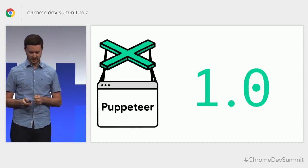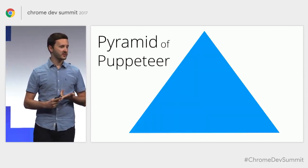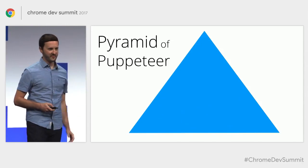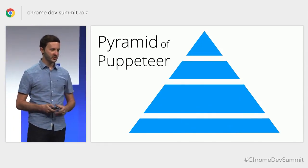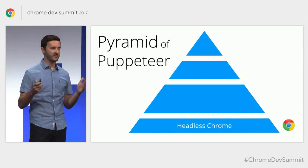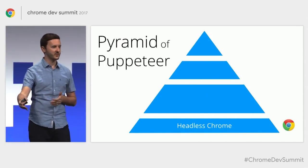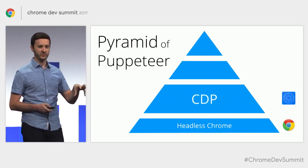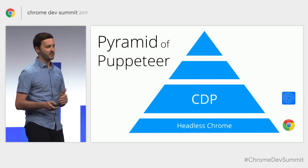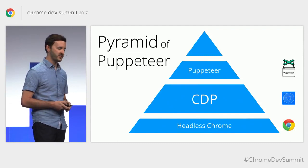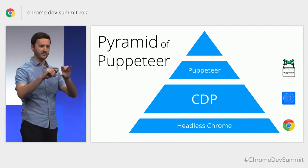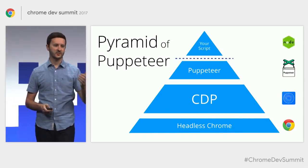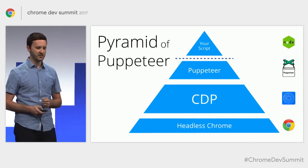This is the pyramid of Puppeteer — how do these things line up? At the very bottom we have Headless Chrome: a modern, evergreen browser with the latest web platform features. You can test Service Worker, test push notifications. On top of that is the Chrome DevTools protocol — we're not interacting with that directly, but it's what talks to the browser. Puppeteer is the little library that wraps the Chrome DevTools protocol. And at the very top, that's your unit test, smoke test, automation scripts — the scripts you write in Node.js.